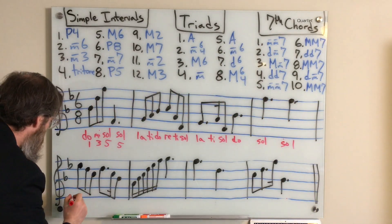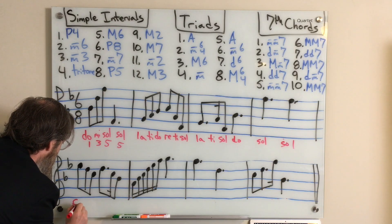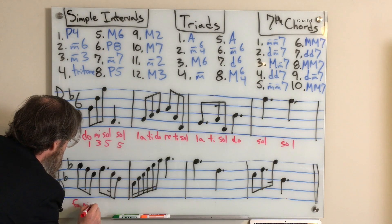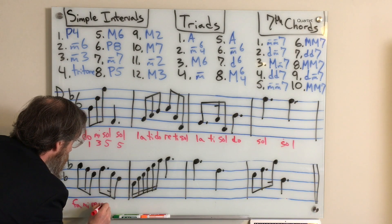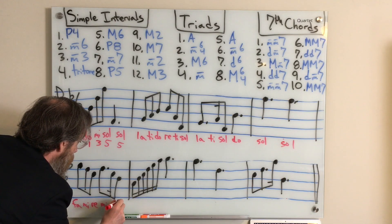So that's what we're using here. And we're putting all this in here. So on the second line, we've got fa, mi, re, mi, re, do.